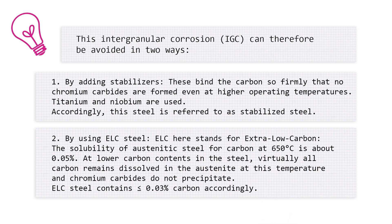Second, by using ELC steel. ELC here stands for extra low carbon. The solubility of austenitic steel for carbon at 650 degrees Celsius is about 0.05 percent. At lower carbon content in the steel, virtually all carbon remains dissolved in the austenite at this temperature and chromium carbides do not precipitate.